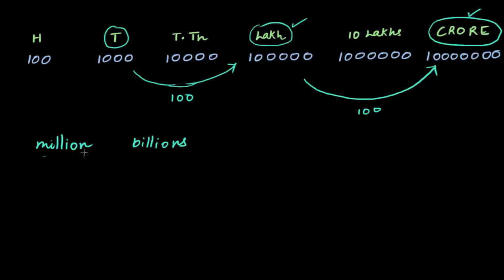So a million is one word, a billion is another word — millions and billions. And these are very big numbers, just like lakhs and crores were very big numbers. But we still don't know how big they really are. So how big is a million in terms of thousands, in terms of lakhs? Compared to lakhs, is a million bigger or smaller? Is a billion bigger than a crore or smaller?